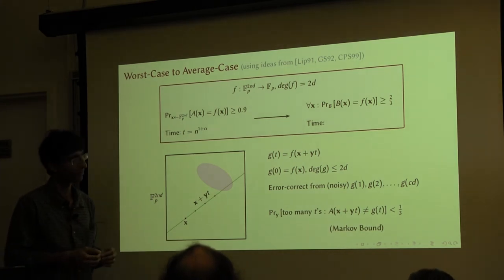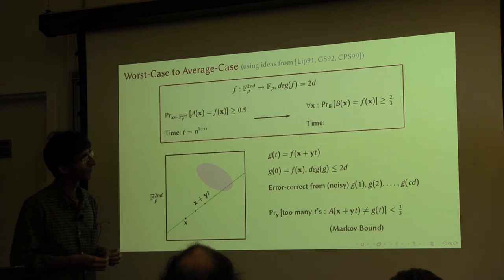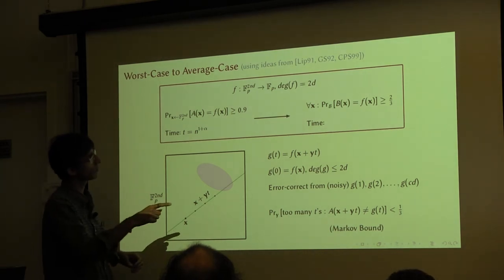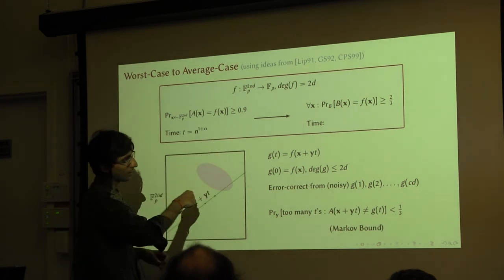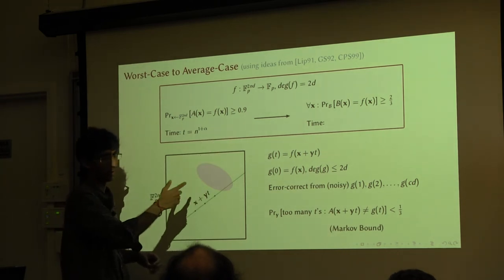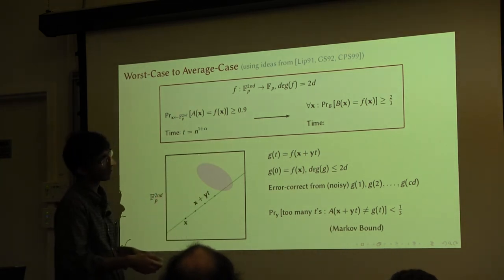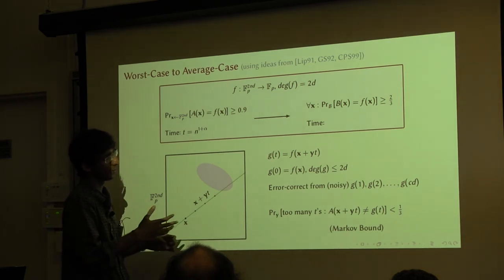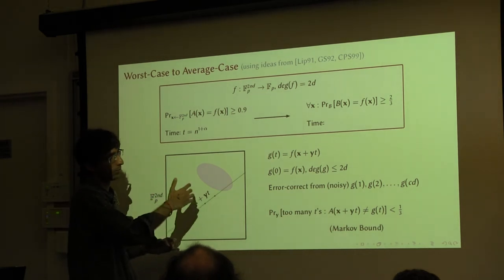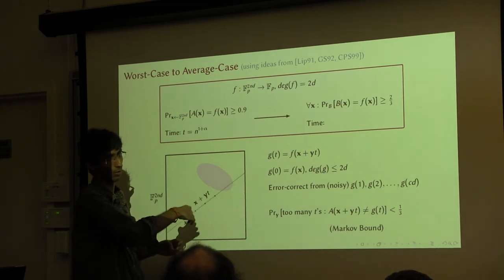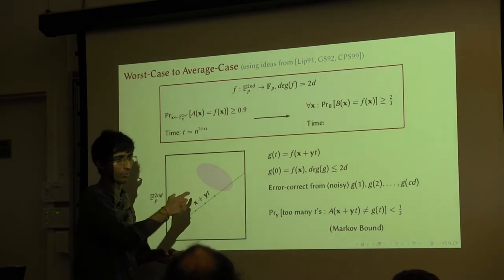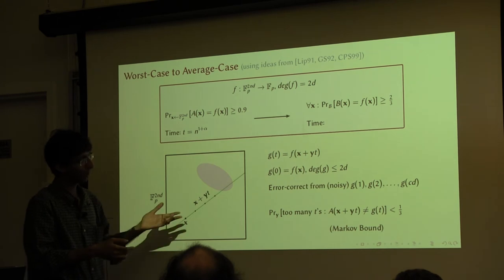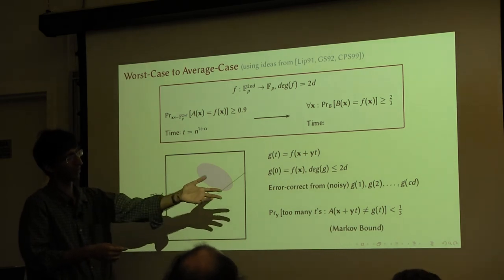Regarding the parameter C: it depends on the probability of A being correct and the degree of the curve you take. Typically it's not much more useful to take the degree to be more than two. You get very good values of C even for a quadratic curve through the point. Even for quadratic curves, C is not that big — something like 25 or so.